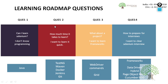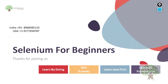Now these are the four questions which almost everybody has as a beginner, and I have answered those. If you have more questions, you can comment below this video or come on the live chat of our website. This is Selenium for beginners — I told you four things: you have to learn it by doing, it's going to take minimum eight weeks, you have to learn Java first, and you have to learn all the frameworks.